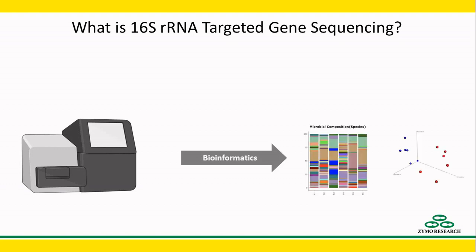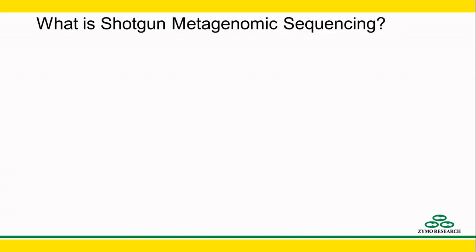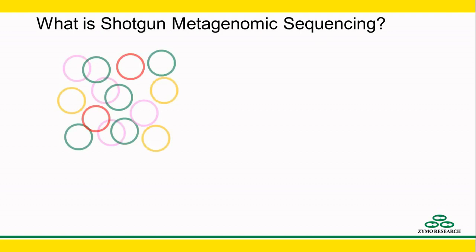After the reads are assigned to a phylogenetic rank, a taxonomy profile can be generated. Shotgun metagenomic sequencing, on the other hand, sequences all given genomic DNA from a sample.